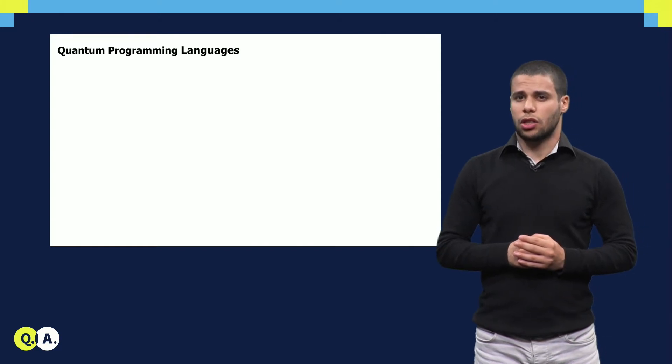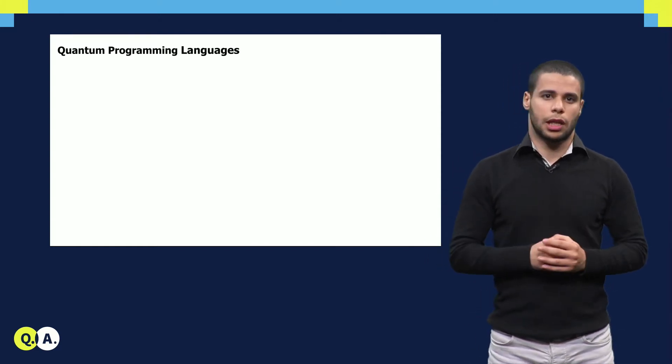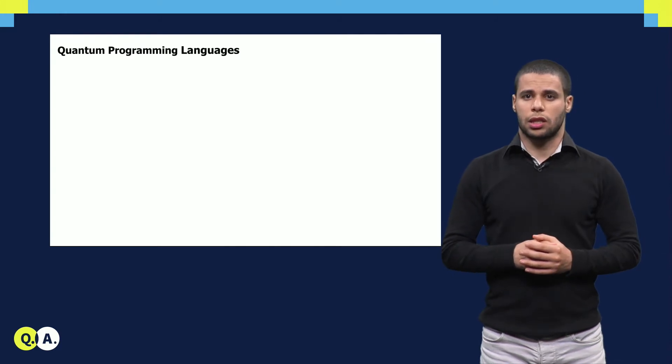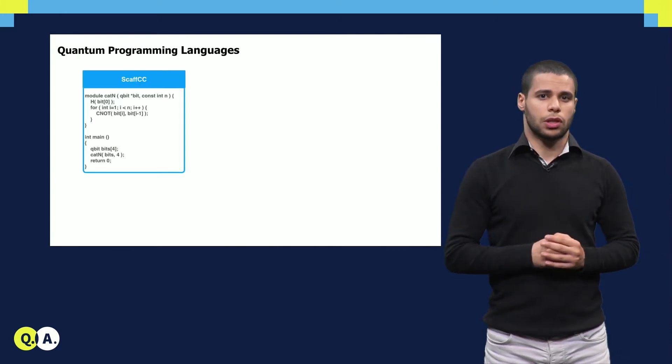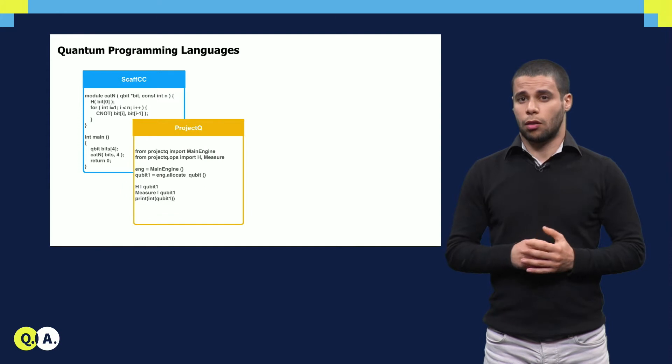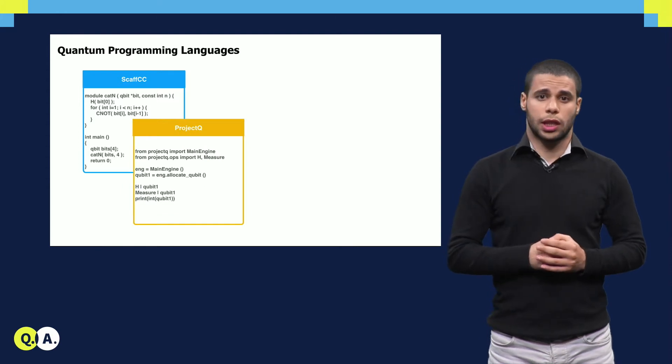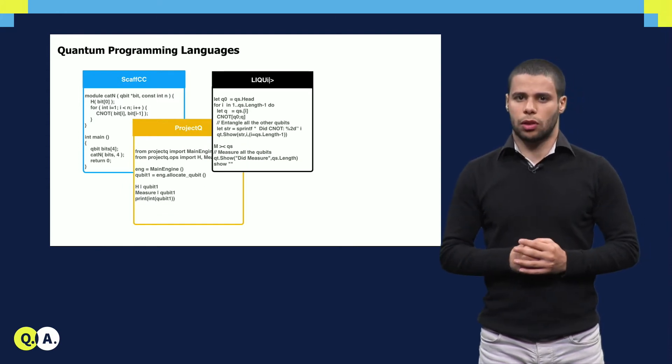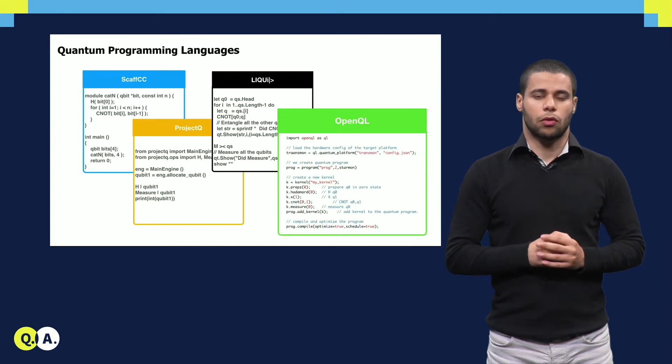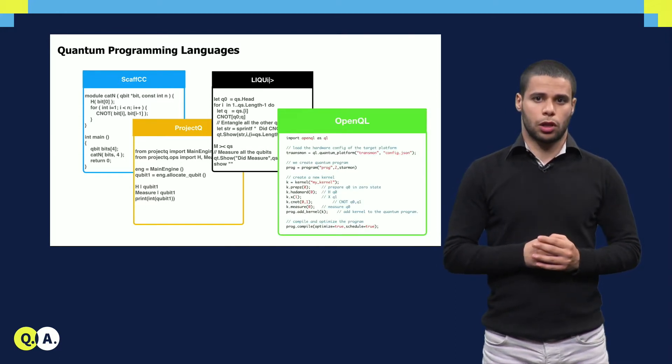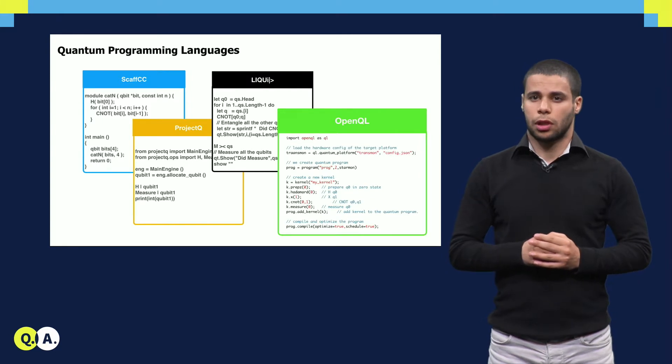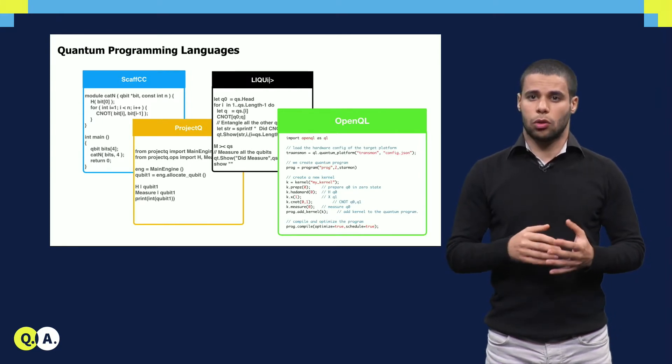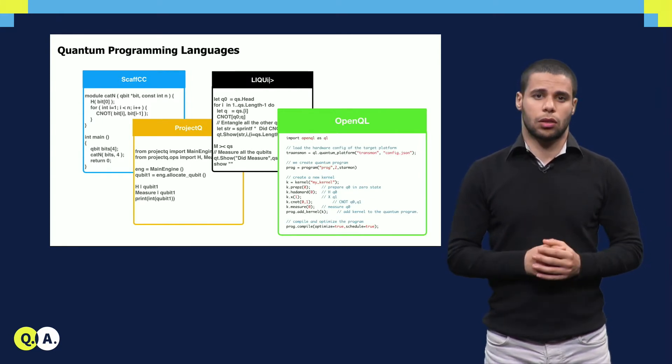Many research labs propose different quantum programming languages and frameworks, such as Scaffold from the University of Chicago, ProjectQ from ETH Zurich, and Liquid from Microsoft. Here in Q-Tech, we have designed the OpenQL framework, which allows programmers to write algorithms including both quantum and classical parts.